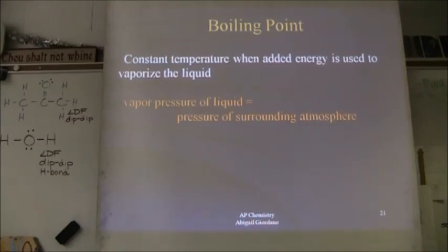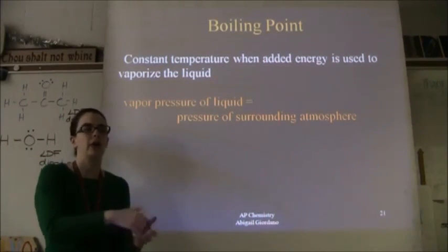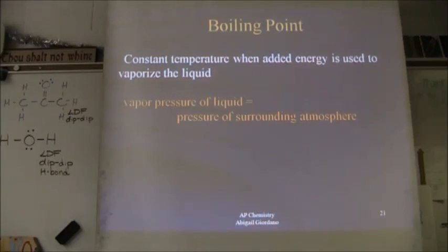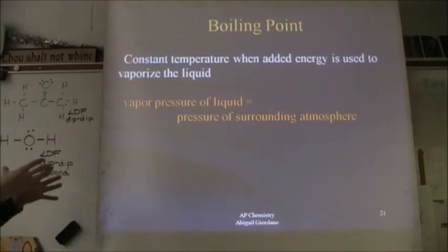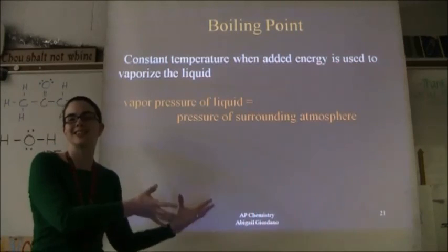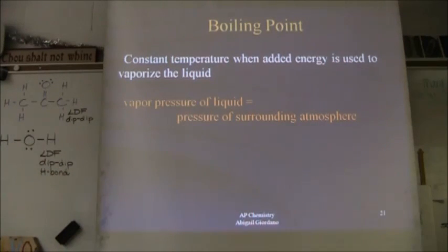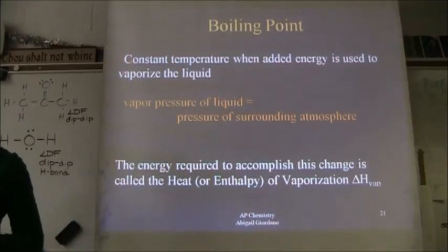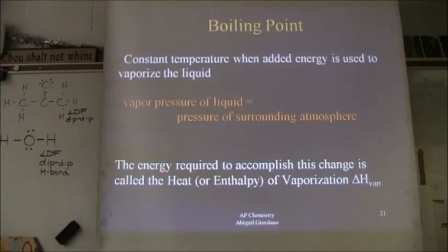The opposite effect occurs in a pressure cooker. You clamp the lid down, creating a high-pressure environment inside the pot. With higher pressure, water may boil at 105°C instead of 100°C, so food cooks faster. Next class we'll get into the math for ΔH vap and the related calculations.